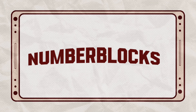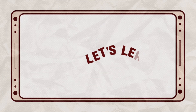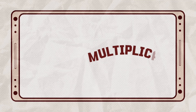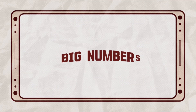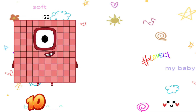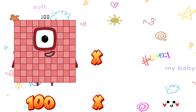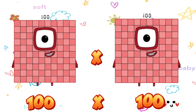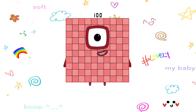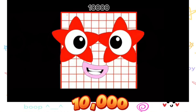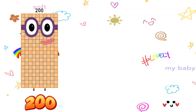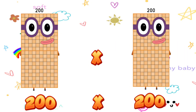Hi everyone! Today let's learn multiplication of big numbers. 100 multiplied by 100 is equals to 10,000. 200 multiplied by 200 is equals to 40,000.